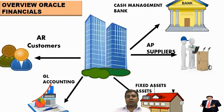General Ledger is a central repository of accounting information of a company; it records the entire financial transactions of a company. A transaction is an event or business activity that involves money. Each transaction is recorded twice — once as a debit account and once as a credit account. The General Ledger deals with five major categories of accounts: assets, liabilities, owner's equity, revenue, and expenses.